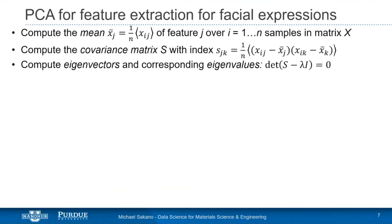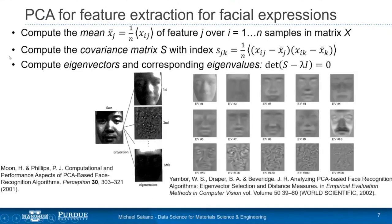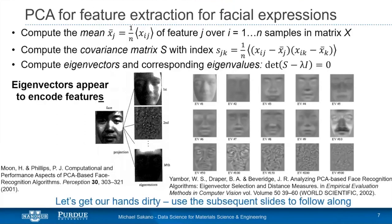For PCA applied to facial feature extraction, the algorithmic approach involves computing the mean of each feature, developing the covariance matrix, then computing eigenvectors and eigenvalues by diagonalizing it. The eigenvectors give useful information: the first feature describes overall shading, while the second extracts eyes, nose, and mouth. The key takeaway is that eigenvectors encode features of the original data, and a linear combination of them should recover the original data.